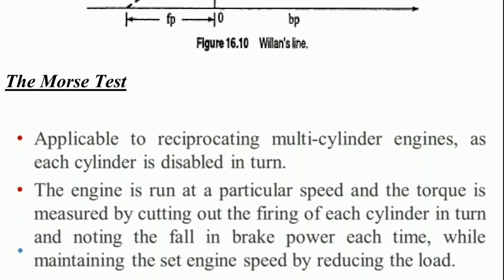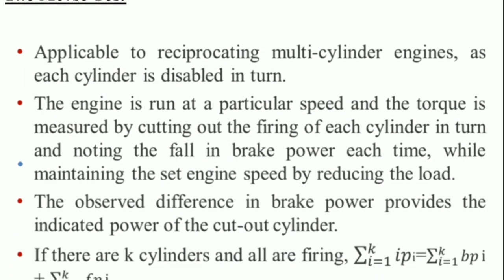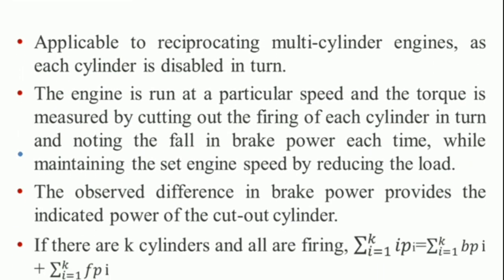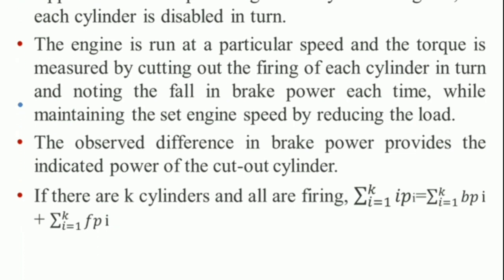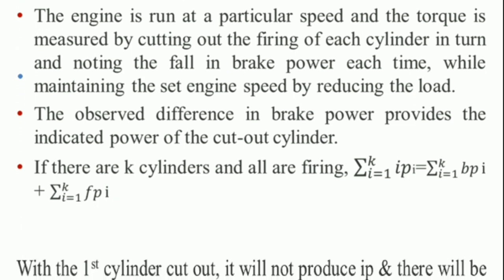The Morse Test is applicable to reciprocating multi-cylinder engines. Each cylinder is disabled in turn; the engine is run at a particular speed and the torque is measured. By cutting out the firing of each cylinder in turn and noting the fall in brake power while maintaining the set engine speed by reducing the load, the difference in brake power provides the indicated power of the cut-out cylinder. If there are k cylinders and all are firing: the summation of IP_i equals the summation of BP_i plus the summation of FP_i.